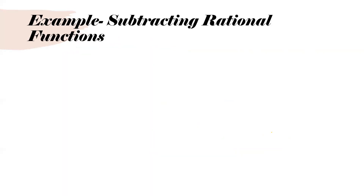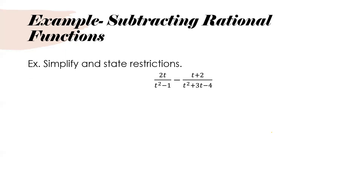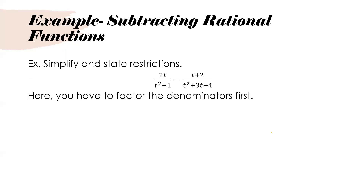Subtracting rational functions is quite similar to adding rational expressions. The only difference is that instead of adding the numerator, you're simply going to be subtracting what's in the numerator. You follow the same steps. First, factor the denominators — and you'll notice right away these are not factored. So t squared minus 1 factors into (t plus 1)(t minus 1) using difference of squares. That's why factoring is so important.